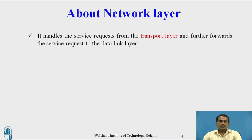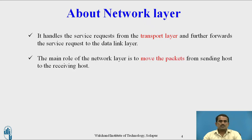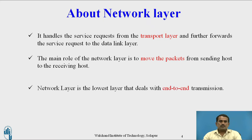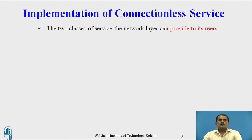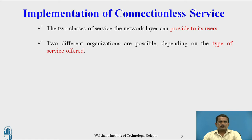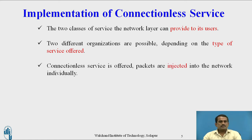Regarding the network layer, we have already discussed in the previous lecture that it handles the service request from the transport layer and further forwards the service request to the data link layer. The main role of the network layer is to move the packet from the sending host to the receiving host. There are two classes of services the network layer can provide to its users, depending on the type of services offered.